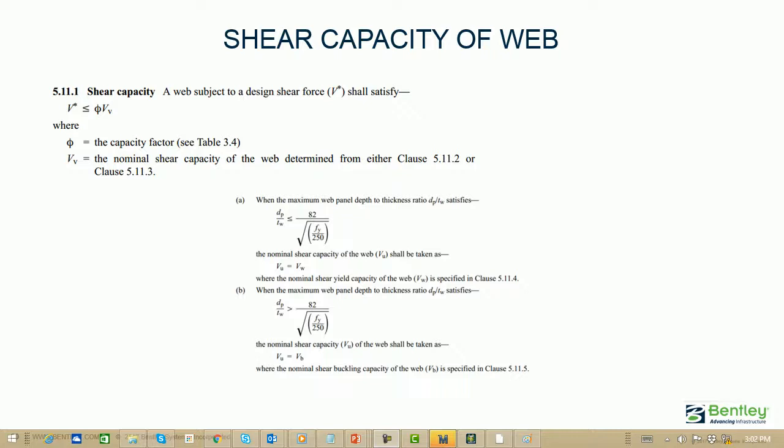How to determine whether it falls on the yielding check or the shear buckling check depends on various rules. If the DP by TW ratio is less than this ratio on the right-hand side, then VU, the nominal shear capacity of the web, has to be taken as the shear yield capacity of the web VW, which is specified in clause 5.11.4.